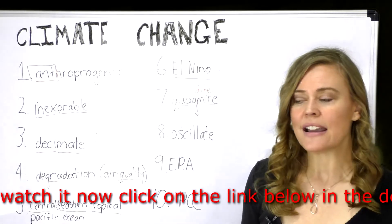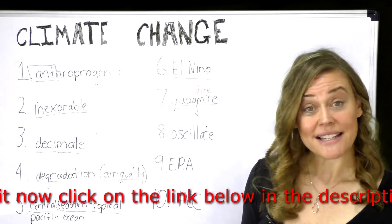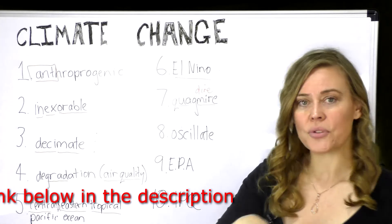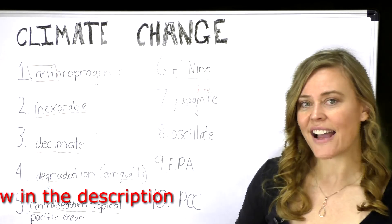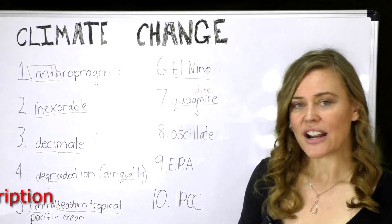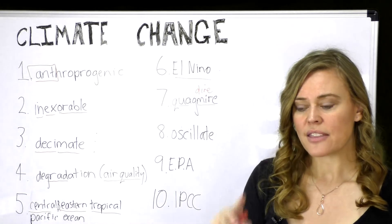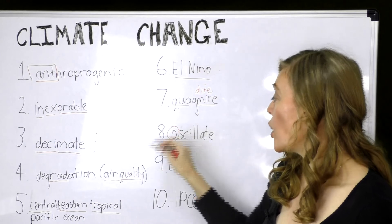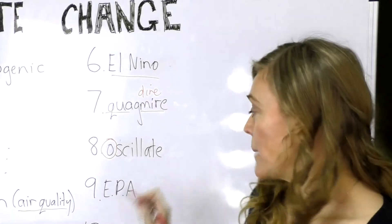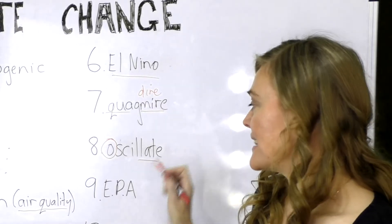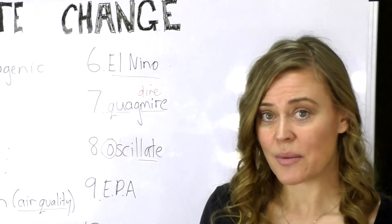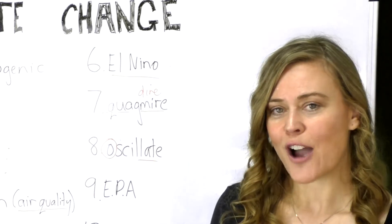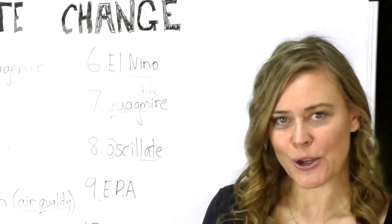Number eight: our keyword for eight is 'eight ball.' Oscillate means to go in different directions — up, down, left, right — unpredictably. Imagine the pool table with all the balls flying around in different directions. The 'O' shape of the ball reminds you of the 'O' in oscillate, and maybe 'late' stands out, so the balls are late getting into the right holes.